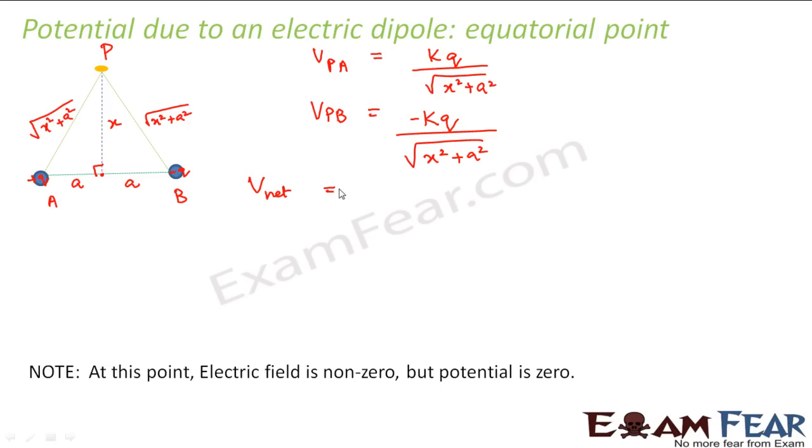So therefore, what would be the net potential? Net potential will be potential due to A plus potential due to B. So if you put the values, what do you get? If you see here, both of them are equal with opposite signs. So they cancel and your net potential becomes zero. That means potential due to an electric dipole at equatorial point is zero.